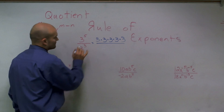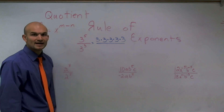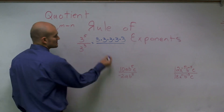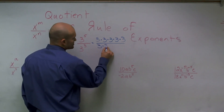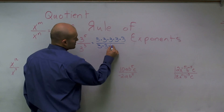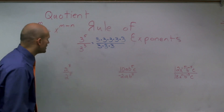What if I want to divide that by 3 multiplied by itself three times? So that'd be 3 times 3 times 3.